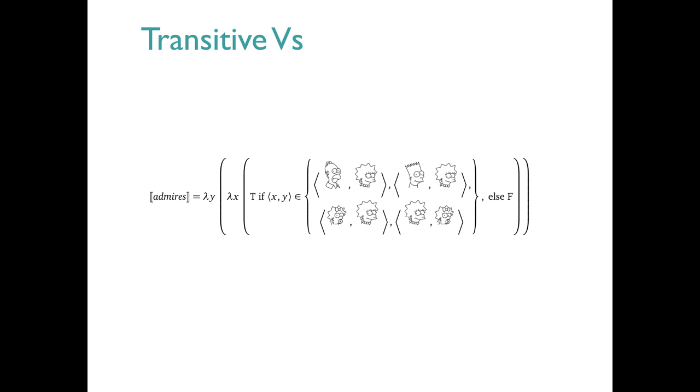Here's an example. It's the verb admires. Imagine we're talking about a sentence like Homer admires Lisa. Intuitively, Lisa will correspond to the Y argument, she's the grammatical object, and Homer to the X argument, the grammatical subject. Then the sentence will be true given this meaning because the pair containing Homer and Lisa in that order is a member of the set that determines the core meaning for admires, as it's given here.